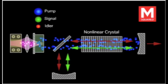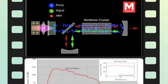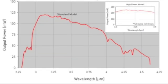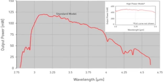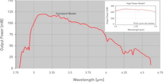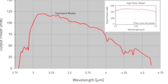In an OPO, each pump photon — that's at 1064 nanometers in this case — generates one idler photon and one signal photon in the nonlinear crystal inside the Firefly. The output in this case is the idler, which typically can be tuned between 2.8 and 4.5 microns.